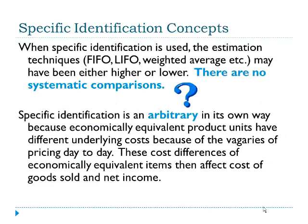When specific identification is used, the estimation techniques of FIFO, LIFO, and weighted average may result in either higher or lower values. There are no systematic comparisons as to whether specific identification would result in a higher or lower inventory value. Specific identification is arbitrary in its own way because economically equivalent product units may have different underlying costs due to the vagaries of pricing day to day, and these cost differences then affect cost of goods sold and net income.